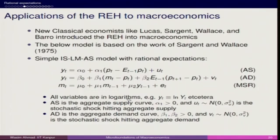All variables are in logarithms — if I am talking about GDP, it is also in log. If money supply is in thousands, it is the log of those thousands. For the aggregate supply curve, alpha 1 is greater than 0 and ut is normally distributed with sigma squared u. As long as ut is 0 this is deterministic, but adding ut makes it stochastic.